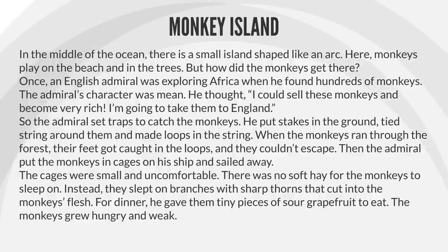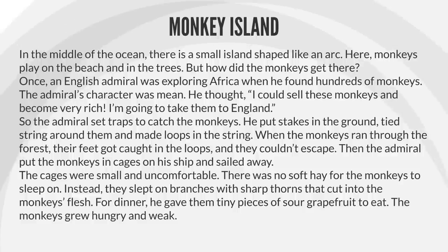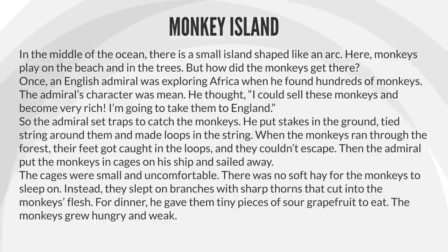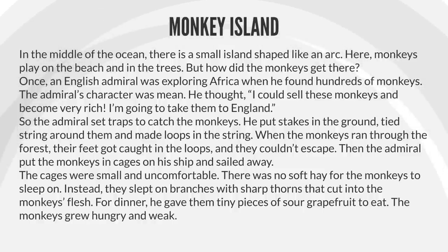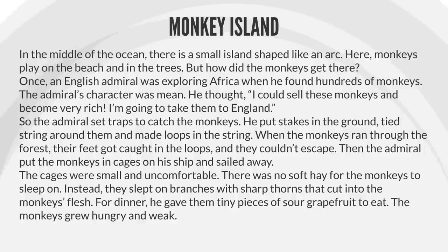Monkey Island. In the middle of the ocean, there is a small island shaped like an arc. Here, monkeys play on the beach and in the trees. But how did the monkeys get there? Once an English admiral was exploring Africa when he found hundreds of monkeys. The admiral's character was mean. He thought he could sell the monkeys and become very rich. He would take them to England. So the admiral set traps to catch the monkeys. He put stakes in the ground, tied string around them, and made loops in the string. When the monkeys ran through the forest, their feet got caught in the loops and they couldn't escape. Then the admiral put the monkeys in cages on his ship and sailed away.